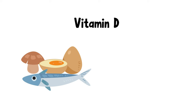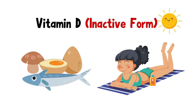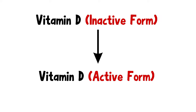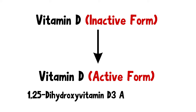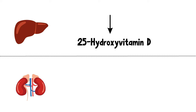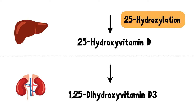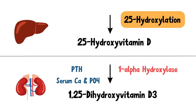Vitamin D can be obtained from food, and it is also synthesized on the surface of our skin when exposed to sunlight. However, this is an inactive form of Vitamin D. This inactive form must be converted to its active form — 1,25-dihydroxyvitamin D3, also known as calcitriol — in order to increase the body's calcium and phosphate level. It gets converted to 25-hydroxyvitamin D in the liver through 25-hydroxylation, and then in the kidneys, it is converted to the active form through the enzyme 1-alpha-hydroxylase. This activation is regulated by parathyroid hormone and serum calcium and phosphate levels.